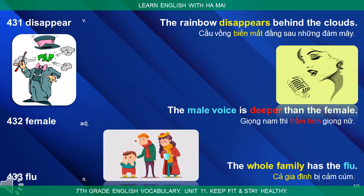Disappear: The rainbow disappears behind the clouds. Female: The male voice is deeper than the female. Flu: The whole family has the flu.